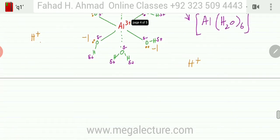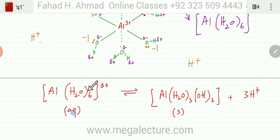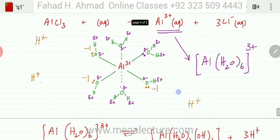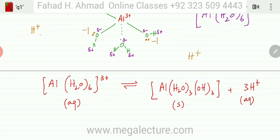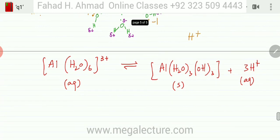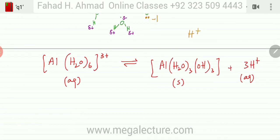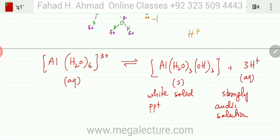Writing the equation: the aluminum previously surrounded by six water molecules breaks down as the H's are knocked away. What's left is Al now surrounded by three water molecules and three OH⁻ groups, as three hydrogens have been removed. The H⁺ ions produced in solution result in a very strongly acidic medium, and a solid precipitate of aluminum hydroxide is formed.